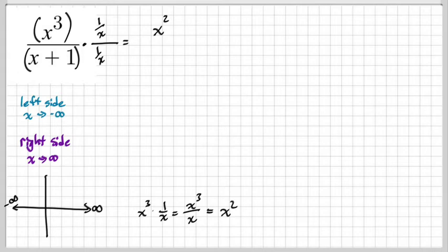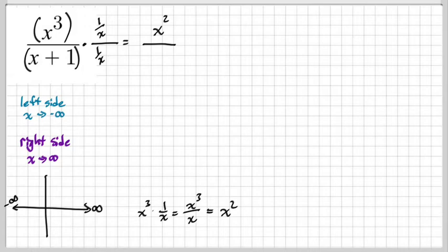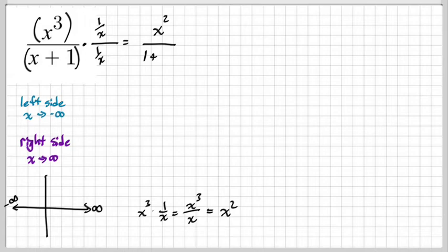That's algebra one stuff, but sometimes we need reminders. On the bottom, when I distribute, I have to multiply one over x times x, and one over x times one. What do I get when I multiply it times x? It would be one. And one times one over x? One over x.